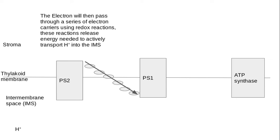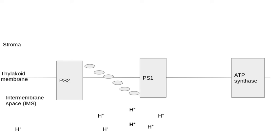This electron then passes down a series of electron carriers, and through a process of various redox reactions—which is where they gain and lose electrons—energy is released which actively transports hydrogen ions into the intermembrane space.